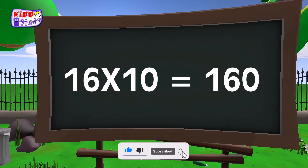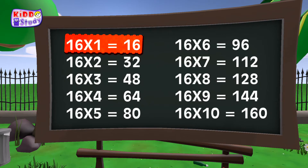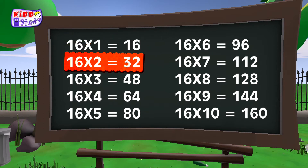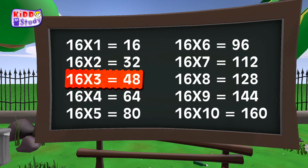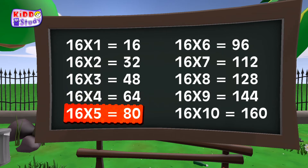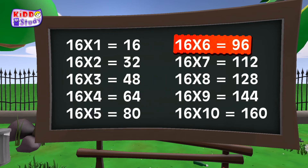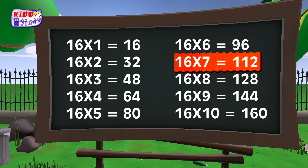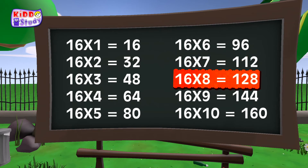One second children. 16 ones are 16, 16 ones are 16. 16 twos are 32, 16 twos are 32. 16 threes are 48, 16 threes are 48. 16 fours are 64, 16 fours are 64. 16 fives are 80, 16 fives are 80. 16 sixes are 96, 16 sixes are 96. 16 sevens are 112, 16 sevens are 112. 16 eights are 128, 16 eights are 128.